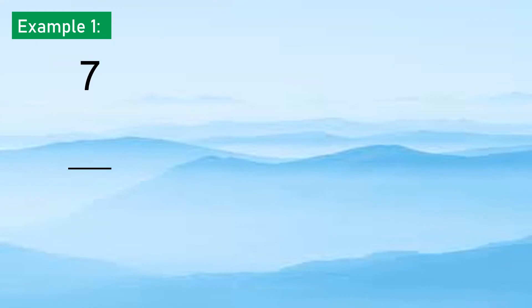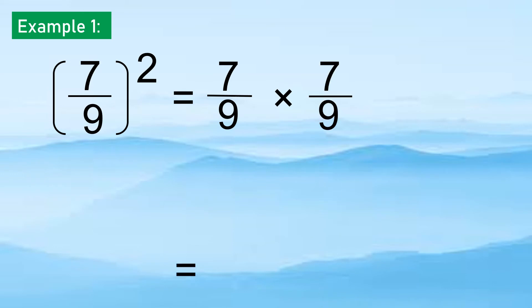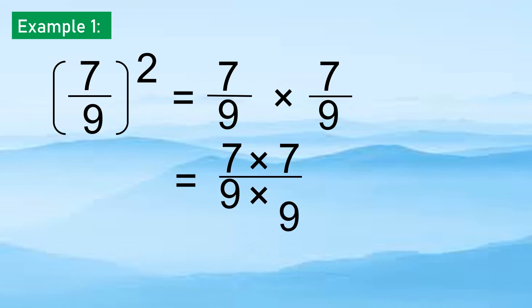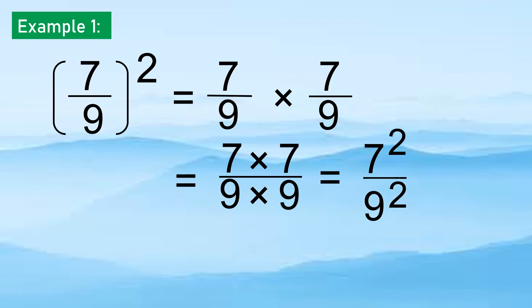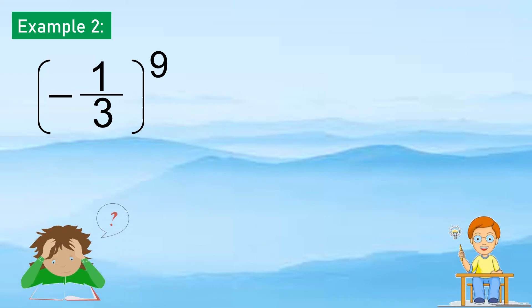Example 1: (7 over 9) raised to the second power equals (7 over 9) times (7 over 9). Multiplying the numerators and denominators and simplifying, we get 7 squared over 9 squared. And if we have (negative 1 over 3) to the 9th power, it equals negative 1 to the 9th over 3 to the 9th.